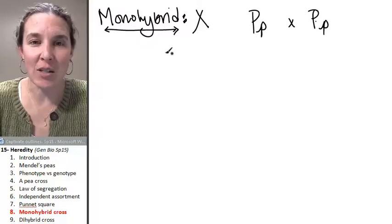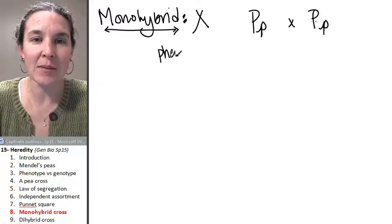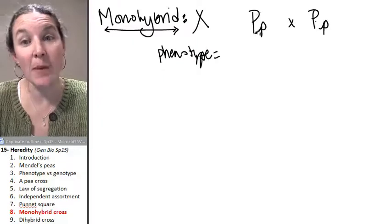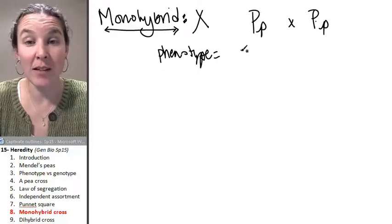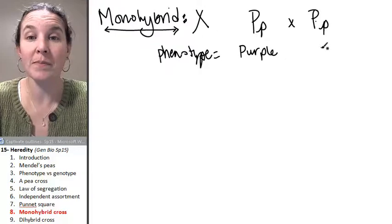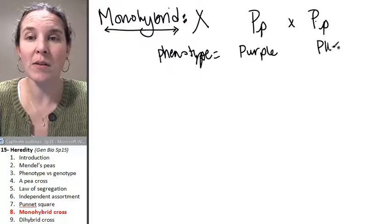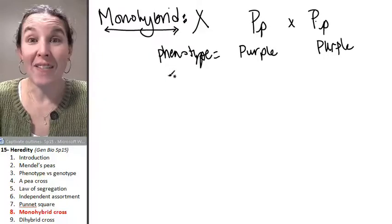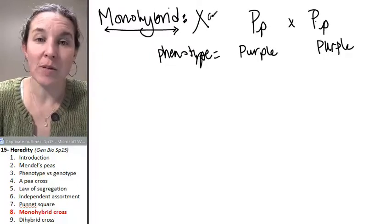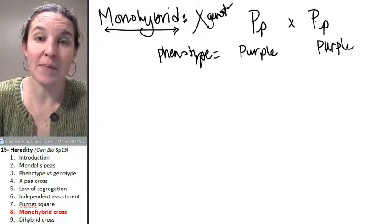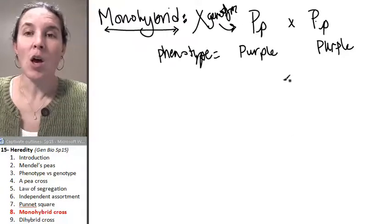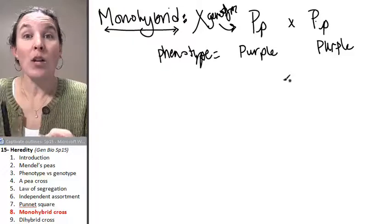What is the phenotype of these parents? We know, because the big P is a dominant allele, we know that these are both purple phenotypes. You following me? Do we have the genotypes? We've got the genotypes. That was given. So that's awesome. We've got the genotypes, we know the phenotypes.